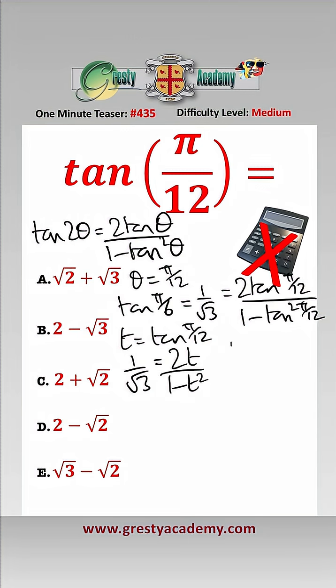Solving that, we get 1 minus t squared equals 2 root 3t, which in quadratic form is t squared plus 2 root 3t minus 1 equals 0.